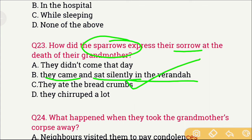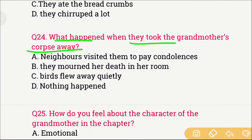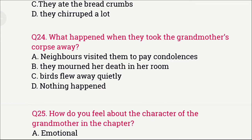Even when the author's mother offered bread crumbs to the sparrows the way grandmother used to, they remained silent. Question number 24: What happened when they took the grandmother's corpse away? The options are: A) Neighbors visited to pay condolences, B) They mourned her death in her room, C) Birds flew away quietly, and D) Nothing happened. The right answer is option C — birds flew away quietly when the grandmother's body was taken from the house.